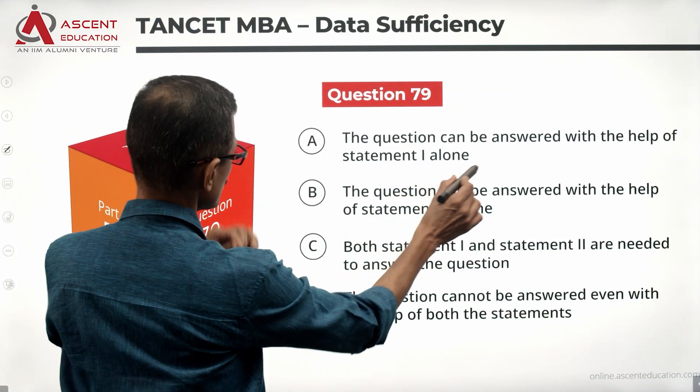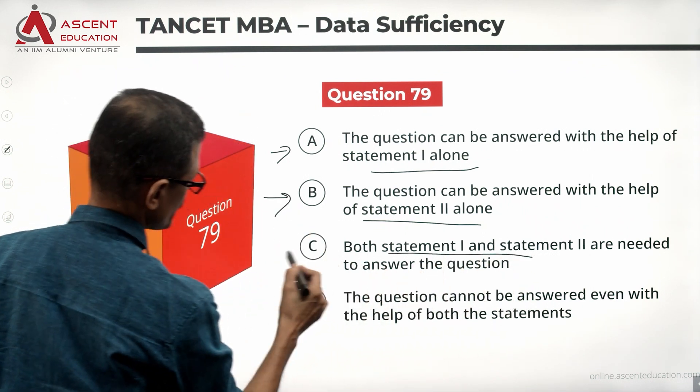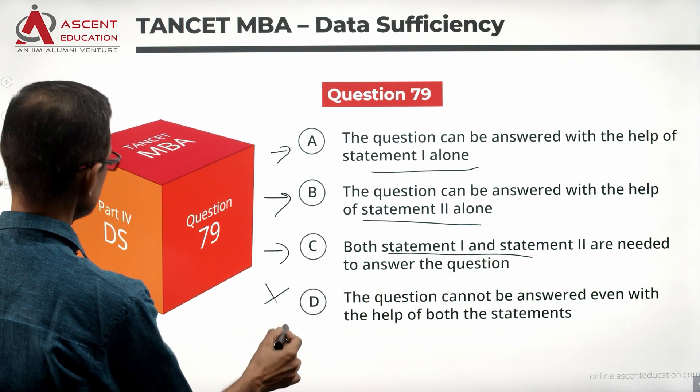Let's look at the answer options. A means statement 1 alone is sufficient. B means statement 2 alone is sufficient. C means together they are sufficient. D means the data is insufficient.